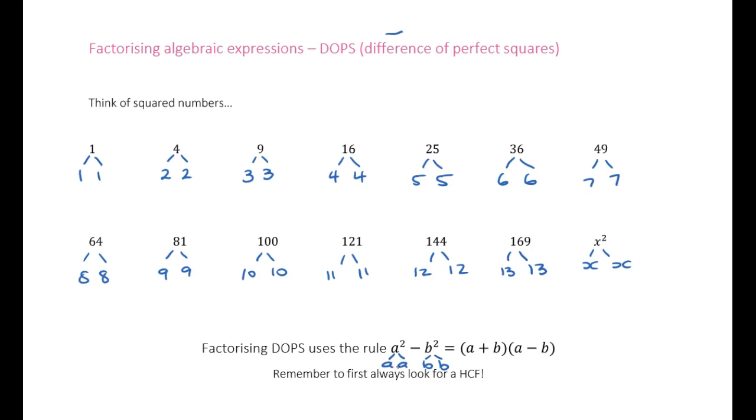Because a times a gave us a squared, a is going to go at the start of each set of brackets. And b squared is afterwards. b times b gave us b squared. So here's a b, and here's a b in the second half of both brackets. There's going to be a plus and a minus in each of the brackets respectively.